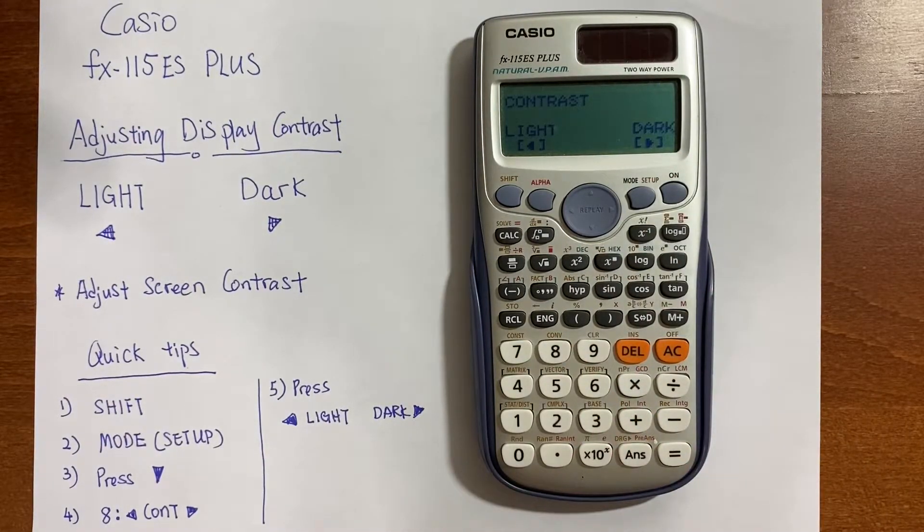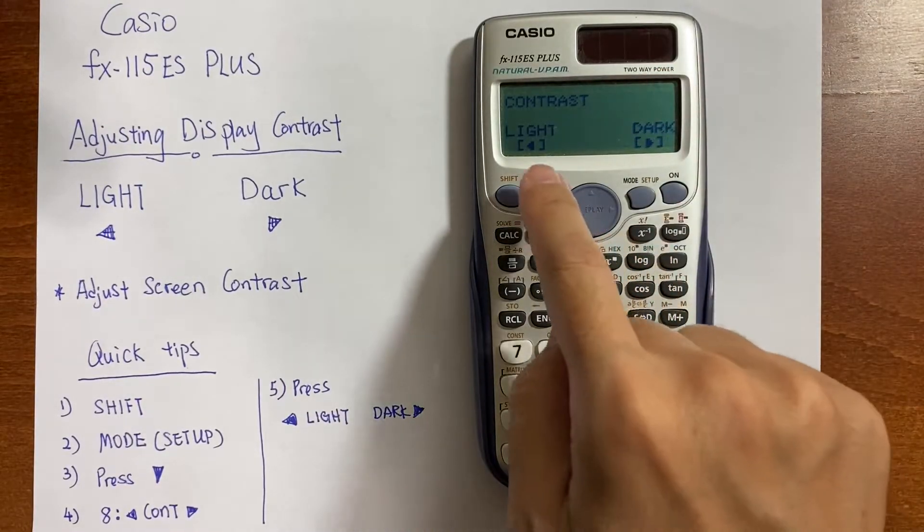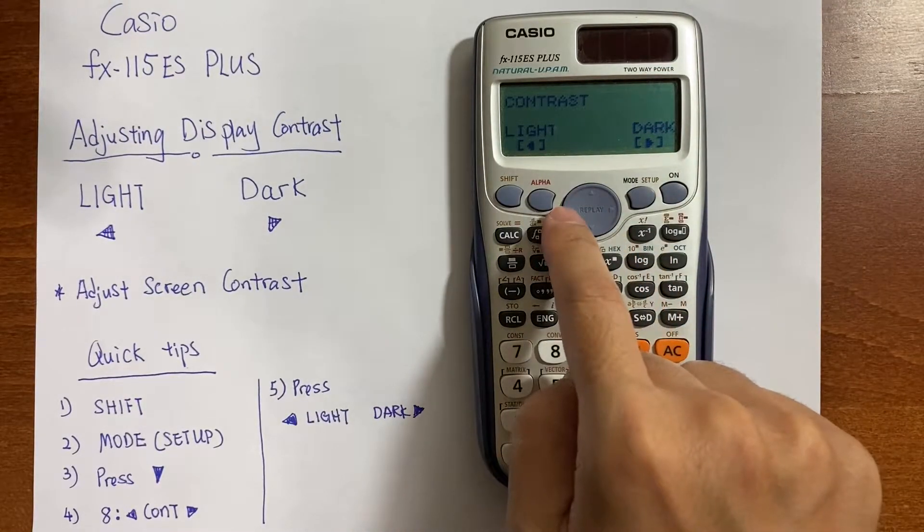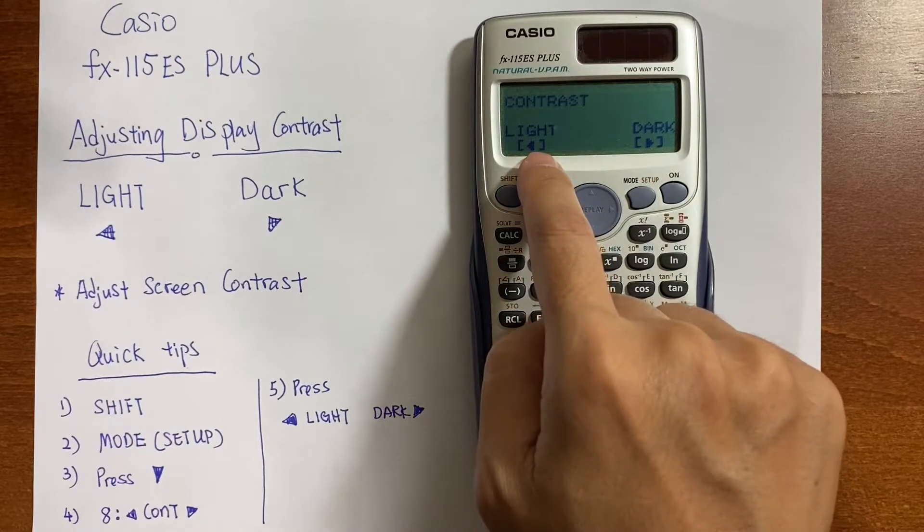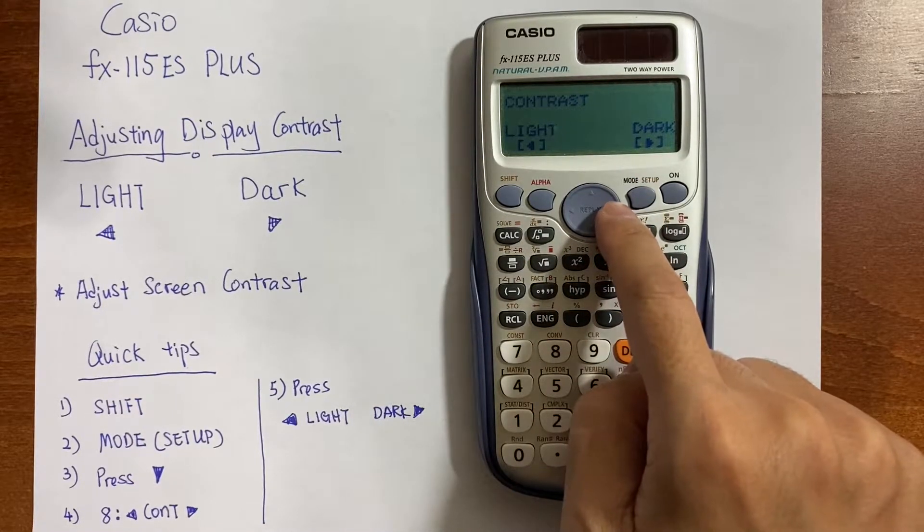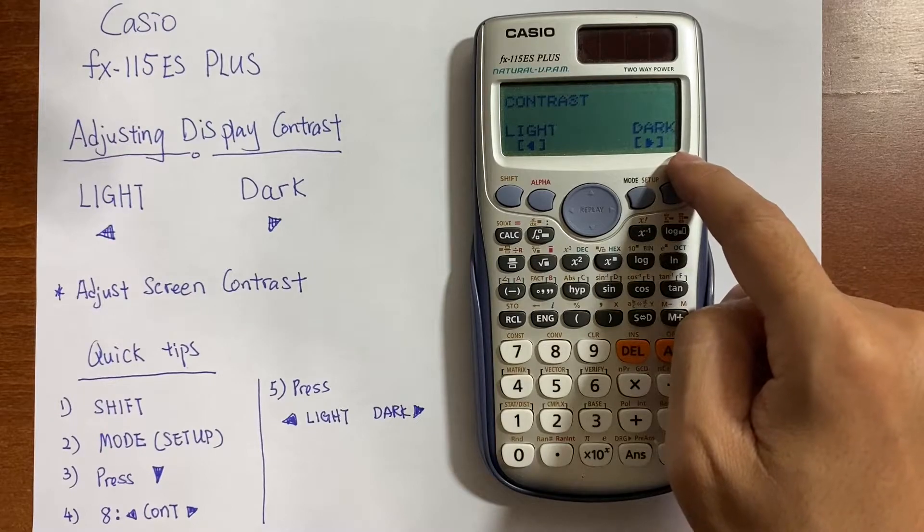On this screen you will see contrast, and then you can click this button to the left to get a lighter display, or press this button to your right to get a darker display.